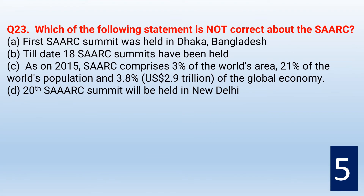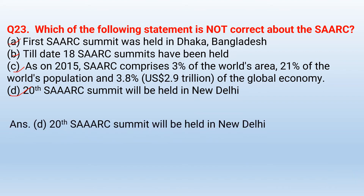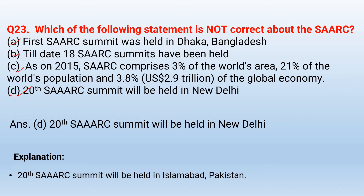Which of the following statements is not correct about SAARC? The statements include: first SAARC Summit was held in Dhaka, Bangladesh; till date 18 SAARC Summits have been held; as of 2015, SAARC comprises 3% of world's area, 21% of the world's population, and 3.8% of the global economy; and the 20th SAARC Summit will be held in New Delhi. The correct option is option D — the 20th SAARC Summit will be held in Islamabad, Pakistan, not New Delhi.